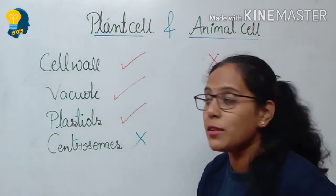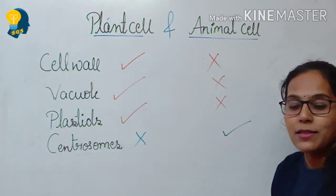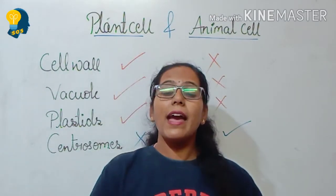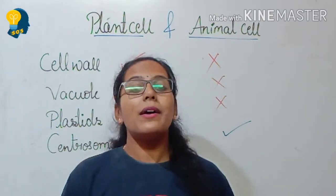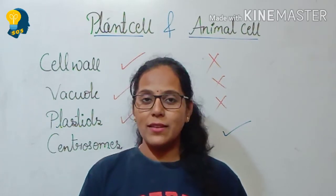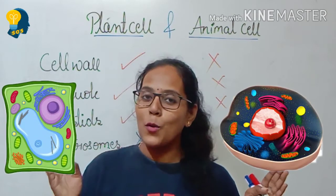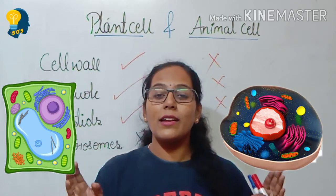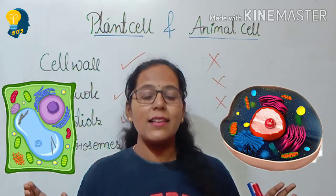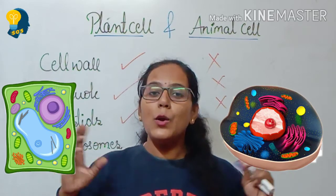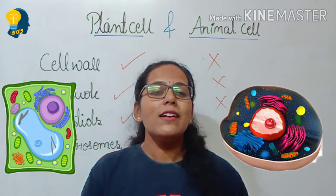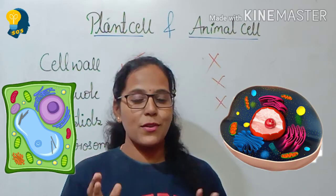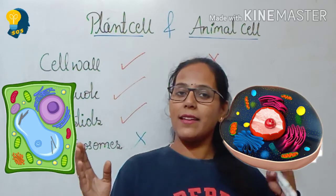These are some of the major differences between the plant cell and the animal cell. Apart from these, plant cells and animal cells have other cell organelles, but those other organelles present in both cells are almost similar and their functions also remain similar. That's all for today's session — I hope you all have a clear idea about the difference between the plant cell and the animal cell.